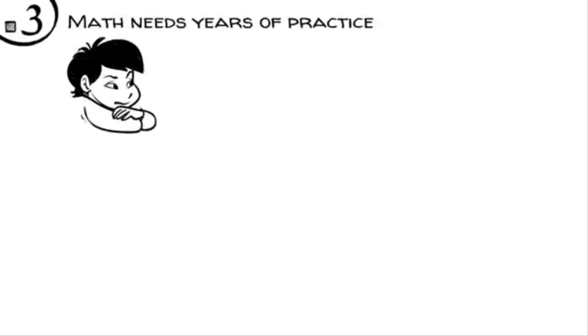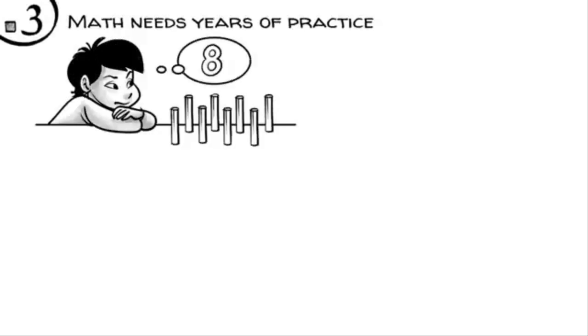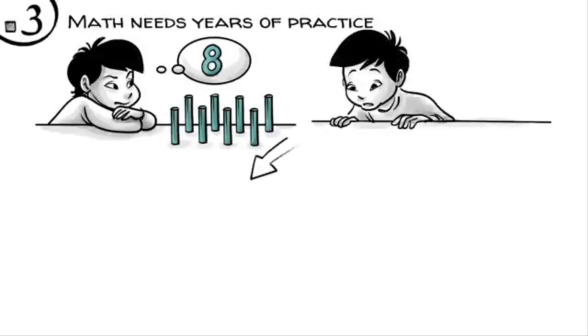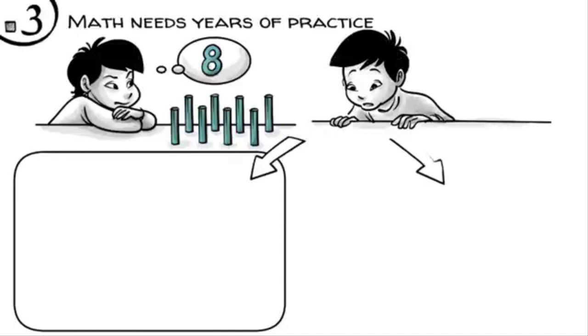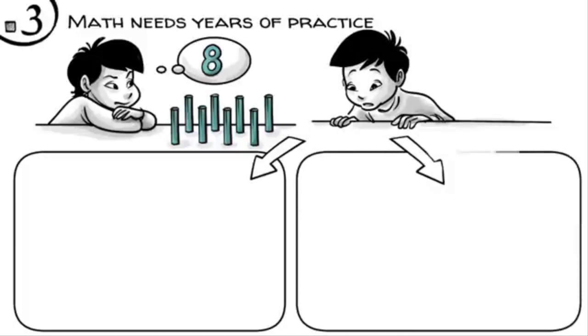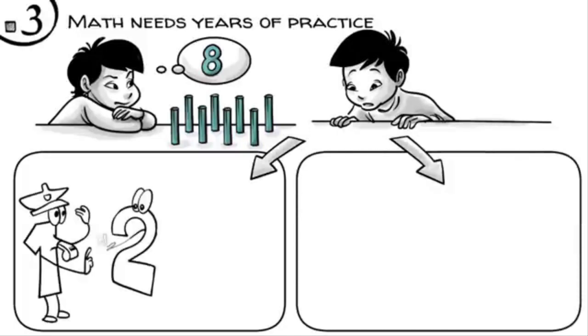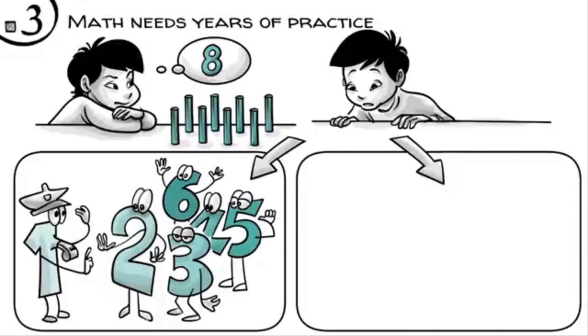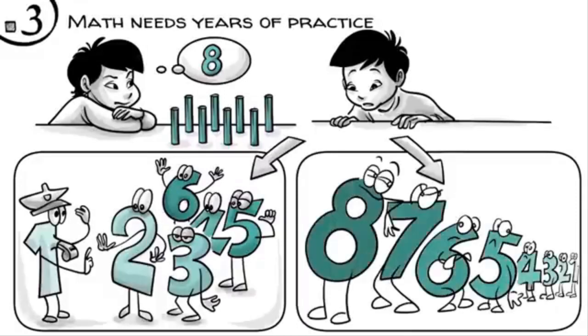Math needs years of practice. This becomes clear when we look at how children learn to understand a number – say, eight. Not the symbol eight, but the idea of the quantity of eight. To internalize this seemingly simple idea, children need a lot of practice in two skills. First, they need to learn how to create order, and then, later on, how to create hierarchical relationships.